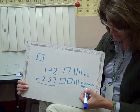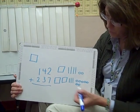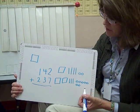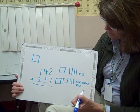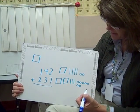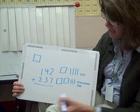Second graders are able to do this with a math drawing. Then they would notice: I have three hundreds, I have seven tens, I have nine ones.